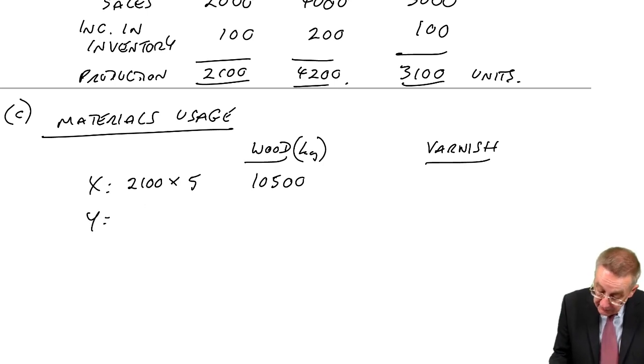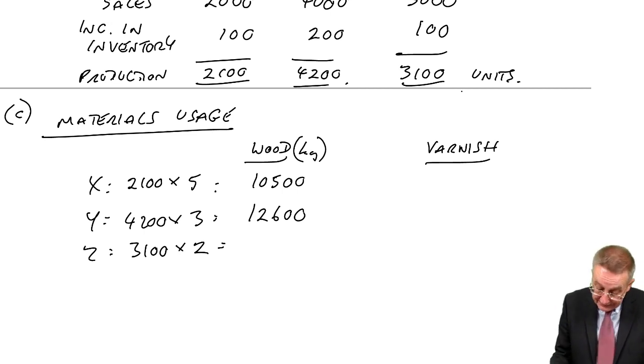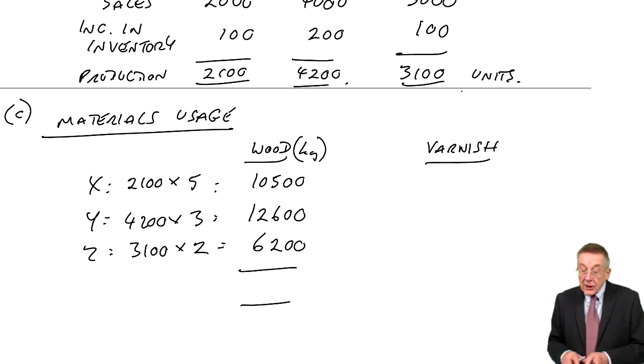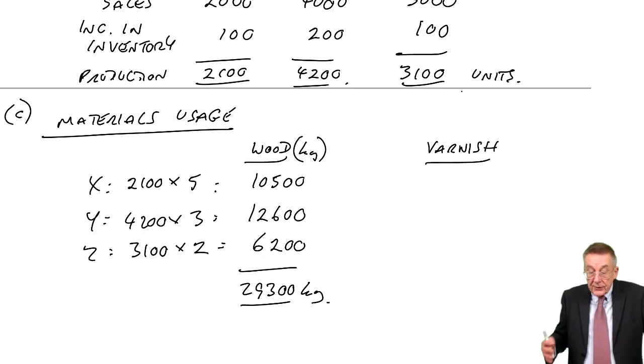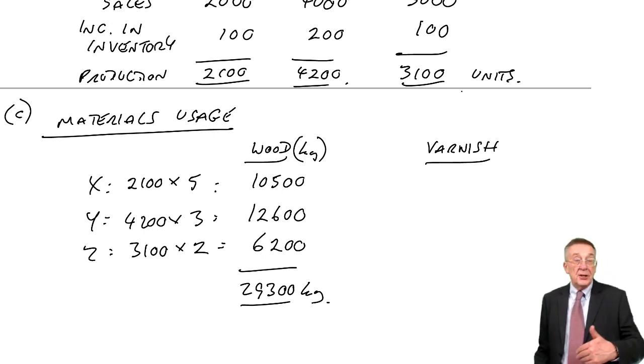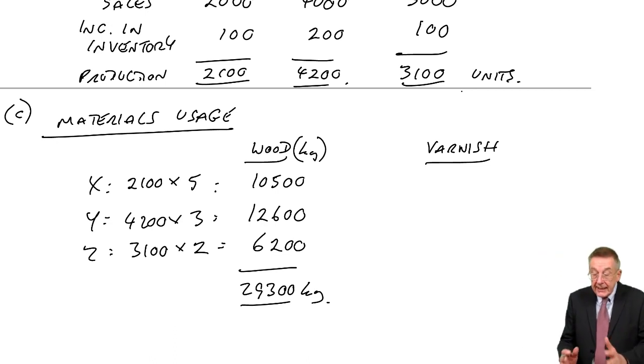So a total of 10,500. Y, we're producing 4,200 and each unit uses 3 kilos, a total of 12,600. And Z, we're producing 3,100, each unit uses 2 kilos, a total of 6,200. Therefore, the total wood we're going to be using is 29,300 kilos. Whoever's responsible for organizing the material doesn't really care whether it's used for X, Y or Z, we expect to use 29,300. What about varnish, which is in litres?